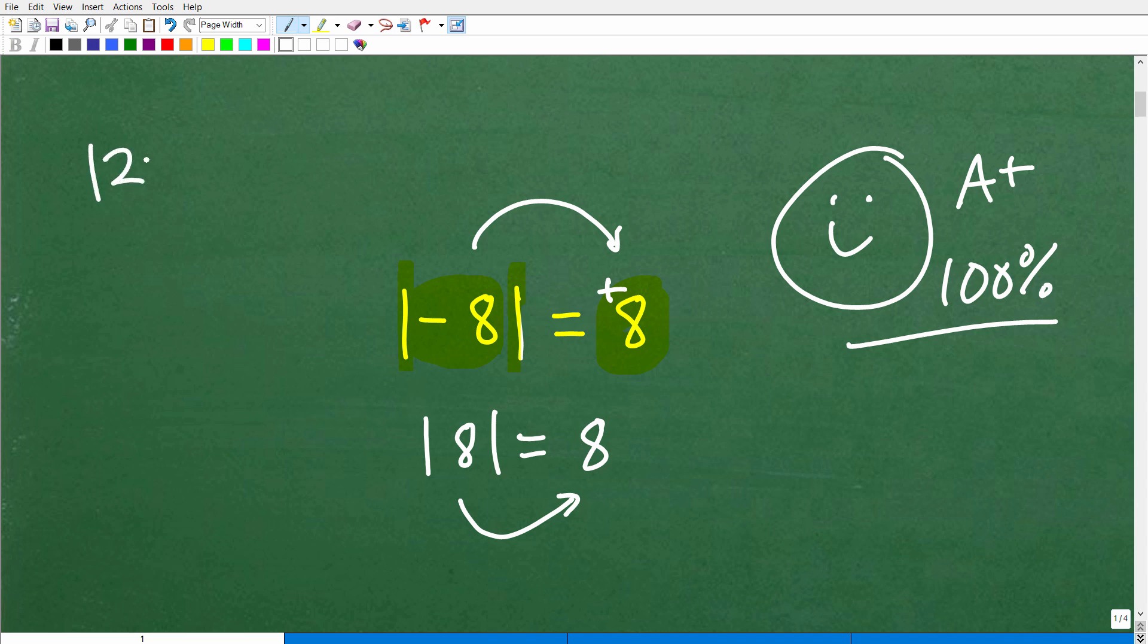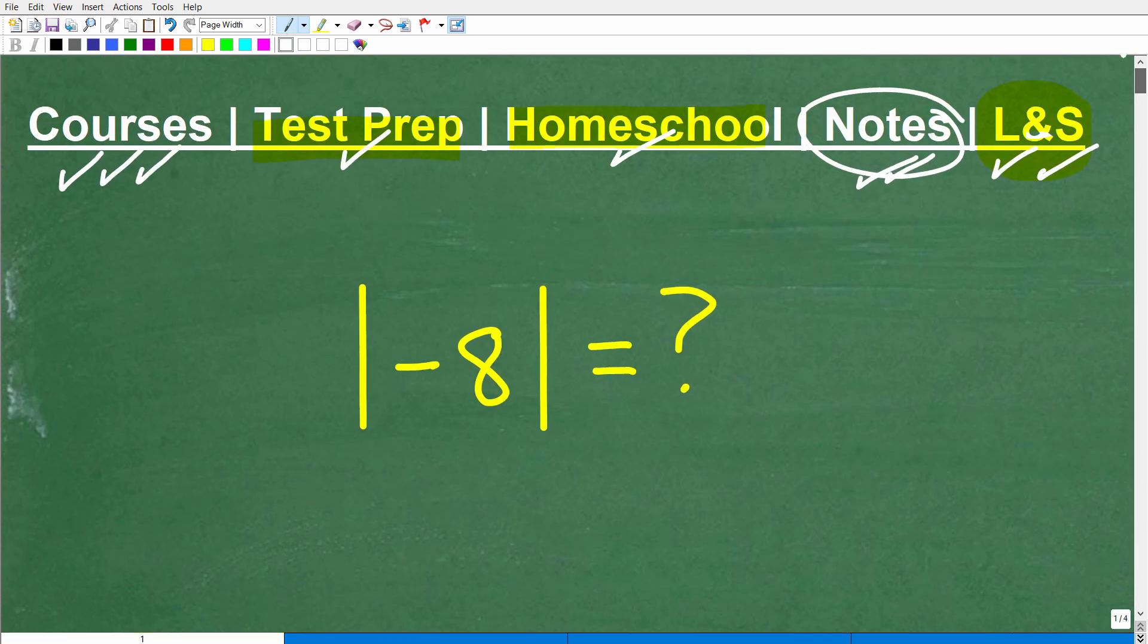like absolute value equations, something like this. Absolute value of 2x plus 1 is equal to 5, and inequalities, et cetera. This is where you really do need to have a good conceptual understanding of what absolute value is, which, of course, we just answered the distance a number is from the 0 on a number line.